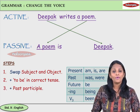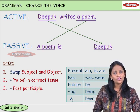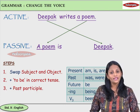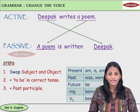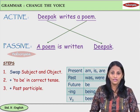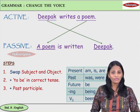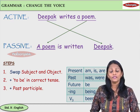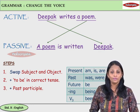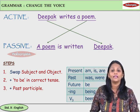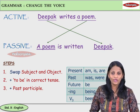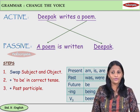Next step: past participle. Which verb's past participle? You see the verb 'writes' — its past participle is 'written.' So we write 'written.' In every tense, 'write' will become 'written.' The tense remains the same, carried by the 'to be' form from step two. So we have: 'A poem is written by Deepak.' The 'to be' form holds the tense, and the main verb becomes the past participle.